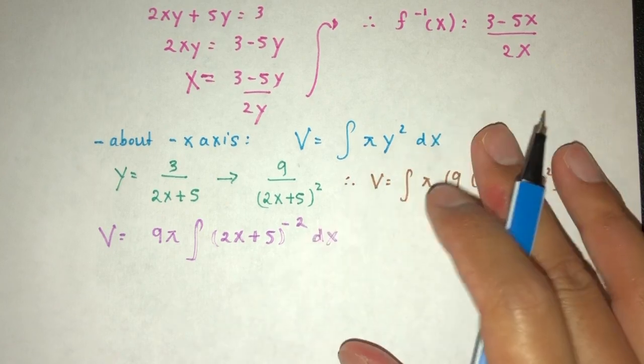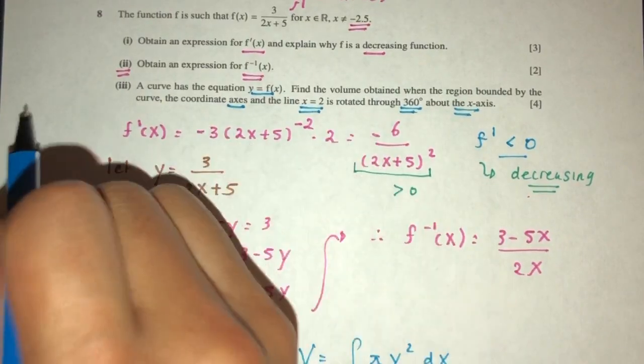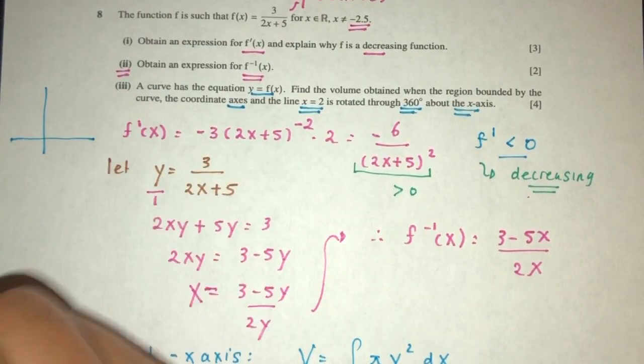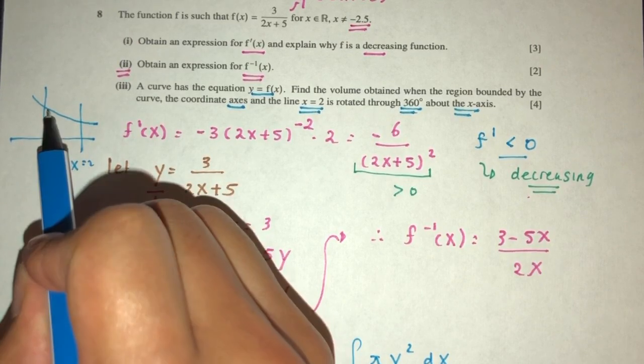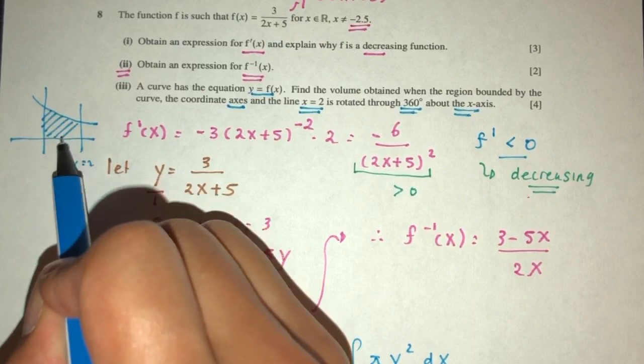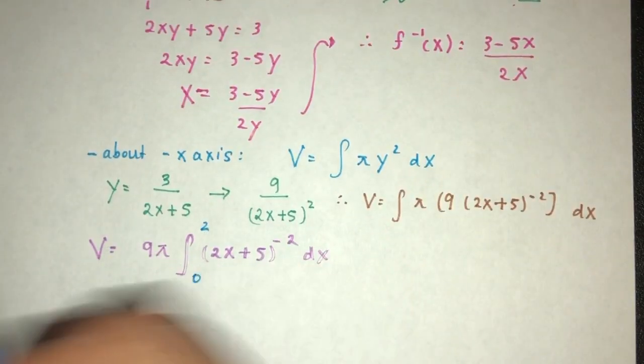First thing first, let's find the limits. So we understand that it is bounded by the axis, which means, for example, your curve will be like this. And this is x equal to 2. So this is the region we are rotating. So this is the point 0. So the limits will be between 2 and 0.